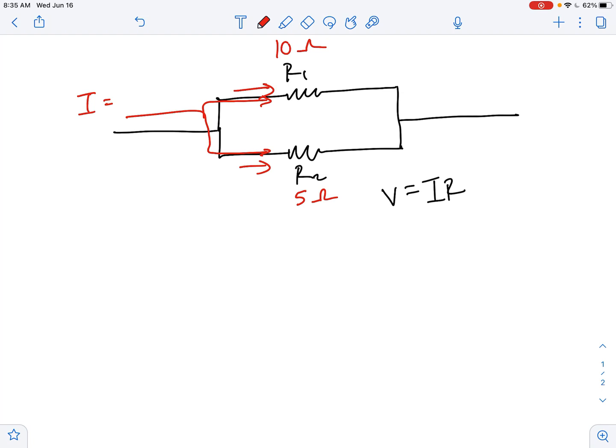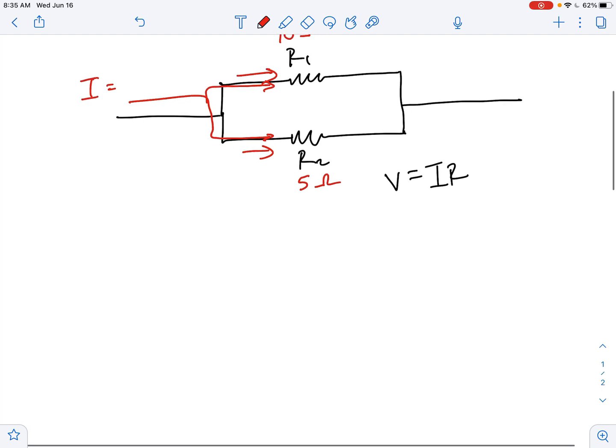That doesn't mean all the current is going to go to resistor two - that's not what I'm saying - but more is going to go down the path of least resistance. So now when you write out the equation V equals IR...